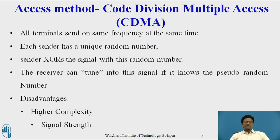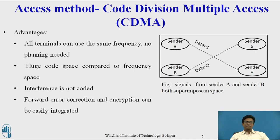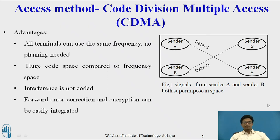One disadvantage is that all signals should have the same strength at the receiver. An advantage of this scheme is that all terminals can use the same frequency and no planning is required. CDMA provides a huge code space when compared to frequency space, interference is not coded, and forward error correction and encryption techniques can be easily integrated into the CDMA scheme.